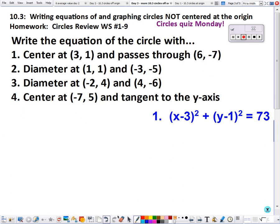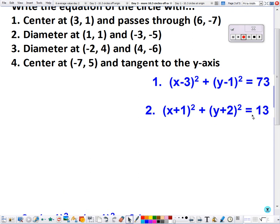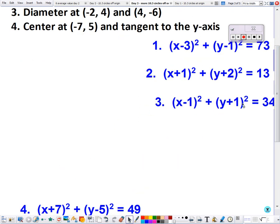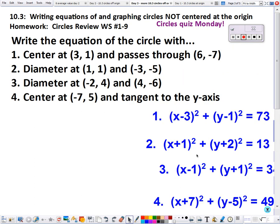And that is how we get 73 is r squared. For number two, we have a diameter at (1, 1).